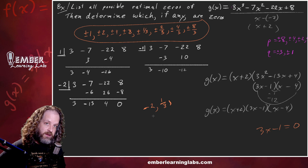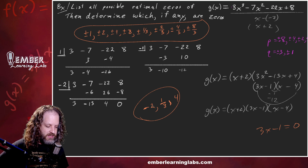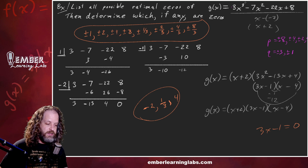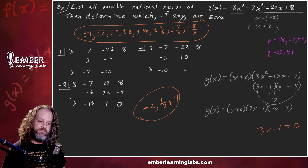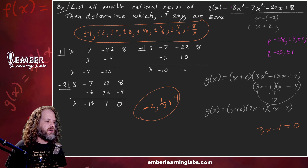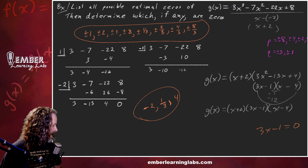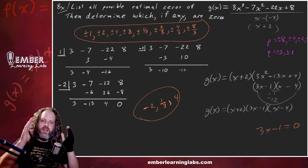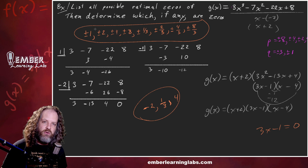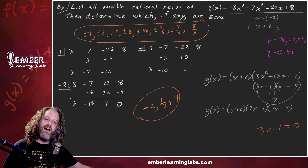So the possible rational zeros were the full list, and the ones that actually are zeros are negative two, one-third, and four. In this example we found all three zeros since a cubic has exactly three. In the previous example there was only one rational zero; we haven't yet learned how to find the irrational or complex ones — we'll see that soon. In the next lesson we'll look at ways to narrow the upper and lower bounds of where zeros can be. See you there!